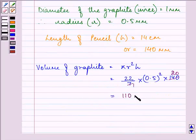This gives us 110 mm³, which converts to 0.11 cm³ by dividing by 1000. Now let us find the volume of the pencil.